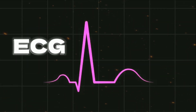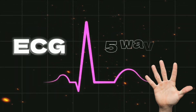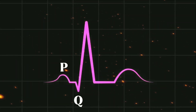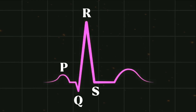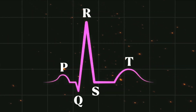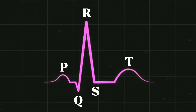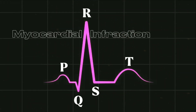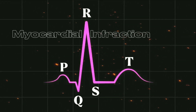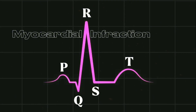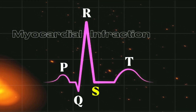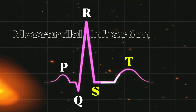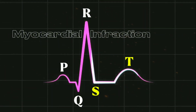Basically, ECG has 5 waves: P, Q, R, S, and T. But in myocardial infarction, the most important things are the S and T wave and the interval between them.